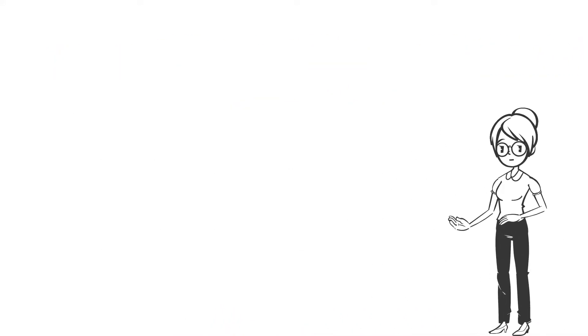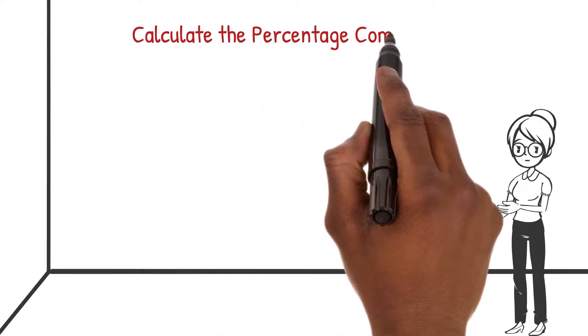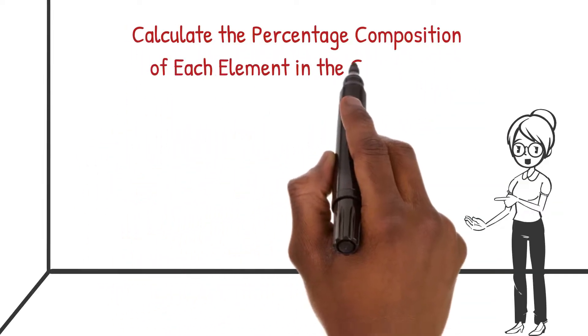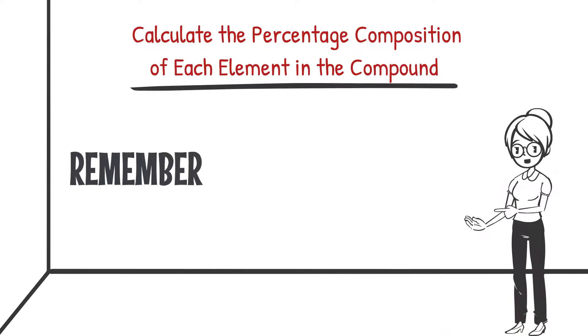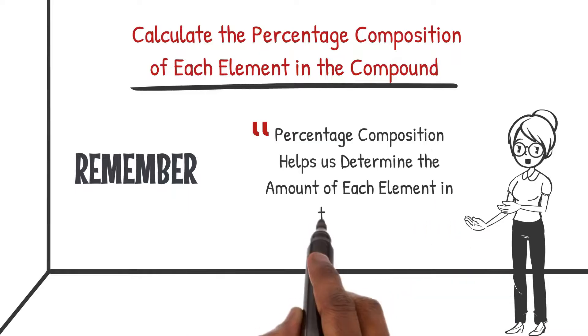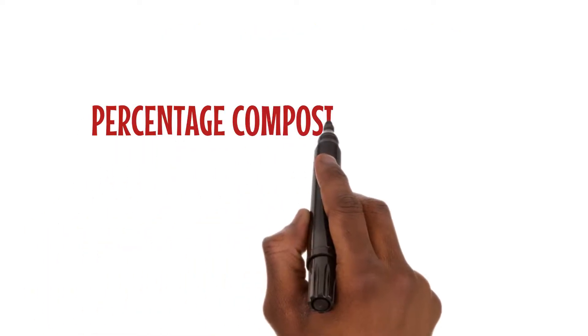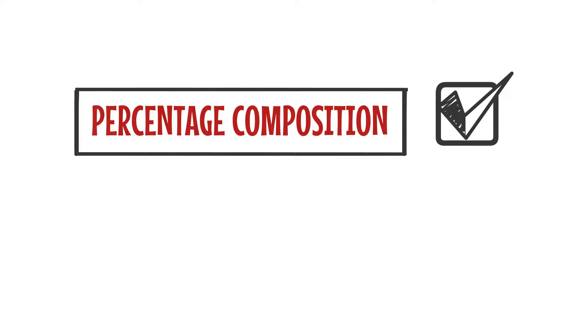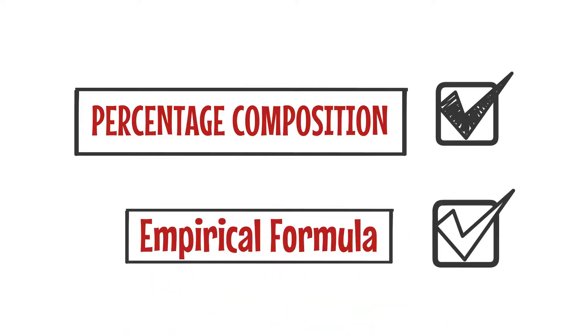To solve this puzzle, we need to calculate the percentage composition of each element in the compound equation. Remember, percentage composition helps us determine the amount of each element in the formula. Once we have the percentage composition, we can find the empirical formula by determining the simplest ratio of atoms. It's like finding the key to unlock the secret formula.